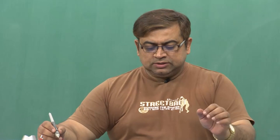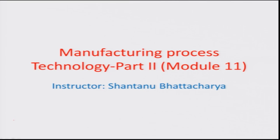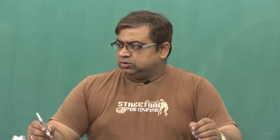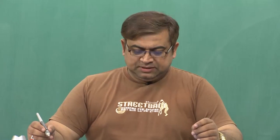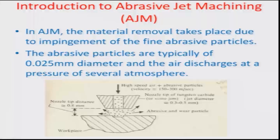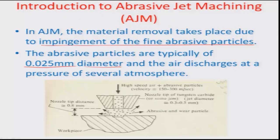Hello and welcome to this manufacturing process technology part 2, module 11. We were discussing various mechanical removal processes like abrasive jet machining and had tried to learn how the AJM process really works. The material removal in AJM takes place due to the impingement of fine abrasive particles, typically about 0.025 millimeters in diameter — about 25 microns — and the air discharges at a pressure of close to almost ten atmospheres.